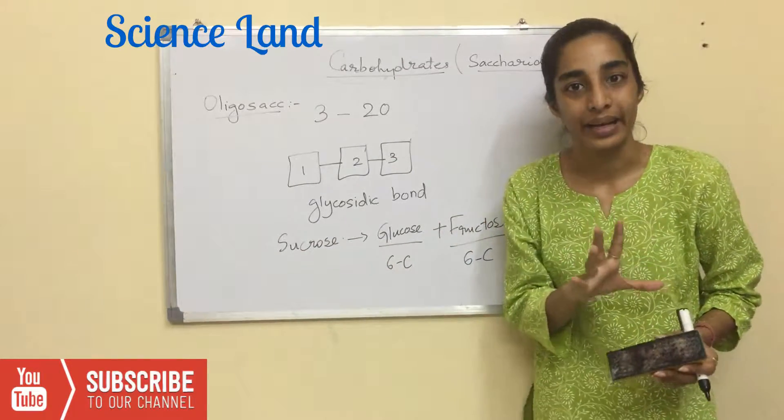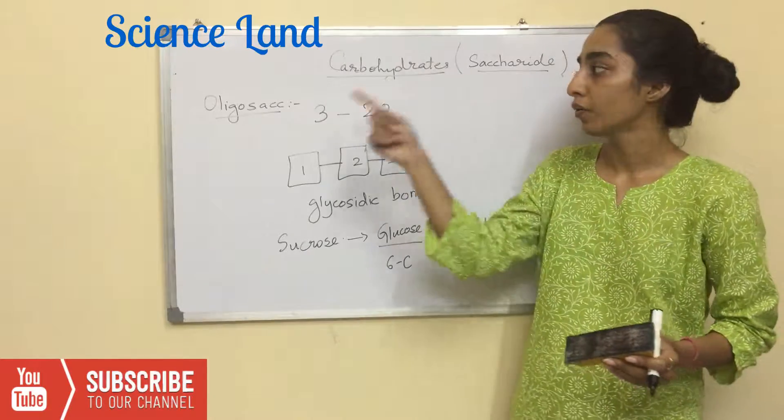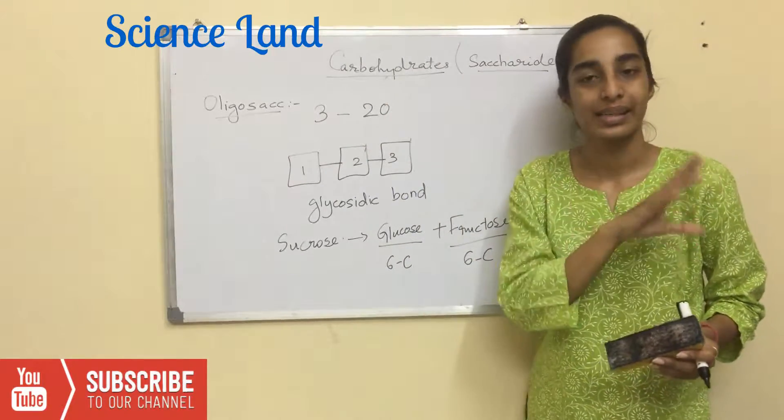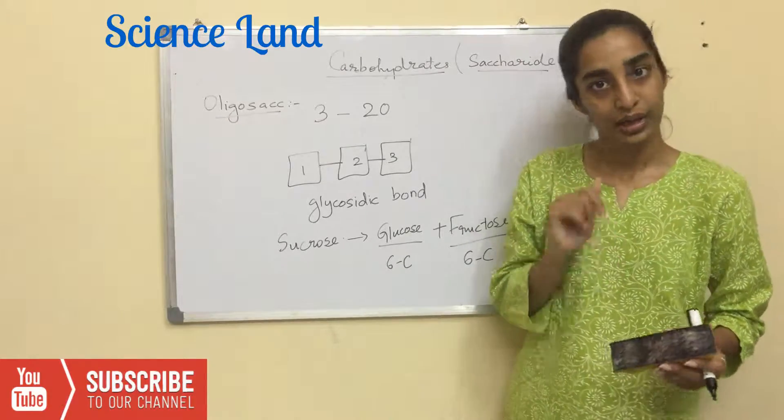In nature, disaccharide is the abundant form of oligosaccharide class. Most of the places disaccharides are found.